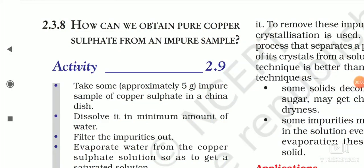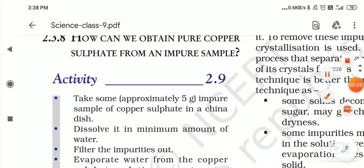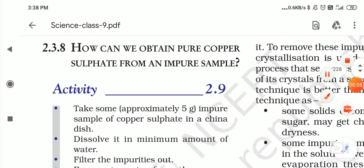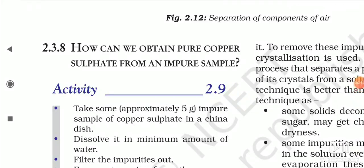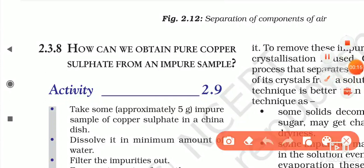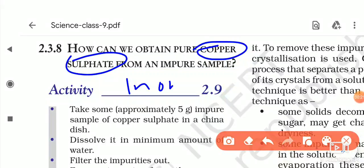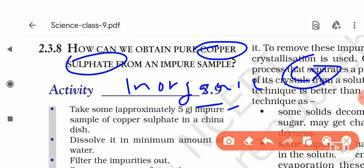Hello everyone. Today our topic is how can we obtain pure copper sulphate from an impure sample. First, what is copper sulphate? Copper sulphate is an inorganic compound — inorganic means it does not have carbon.